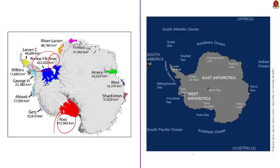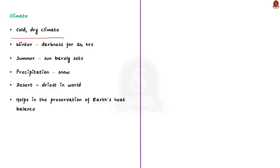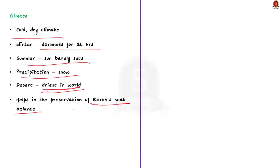Notable surrounding seas include the Ross and Weddell Seas. Antarctica has an extremely cold and dry climate. In winter, there will be complete darkness for 24 hours a day, and in summer months, the sun barely sets. Precipitation is hard to measure and always falls as snow, making the Antarctic desert one of the driest deserts in the world. The Antarctic region plays an important role in the global climatic process — it is an integral part of Earth's heat balance. Ice is more reflective than land or water surfaces, and the massive Antarctic ice sheets reflect a large amount of solar radiation away from the Earth's surface, helping preserve Earth's heat balance.